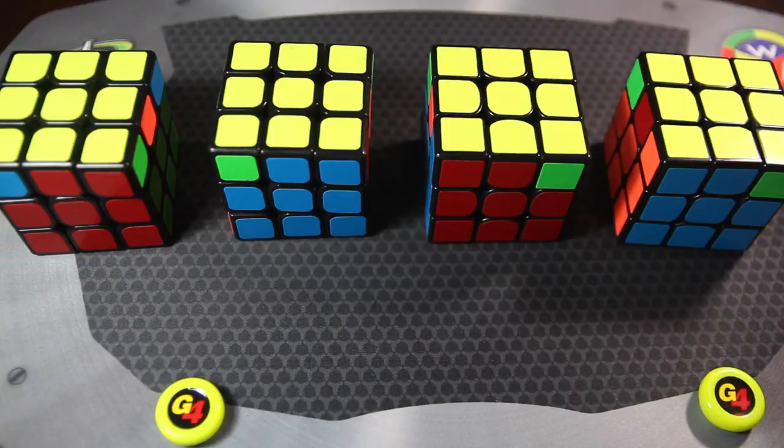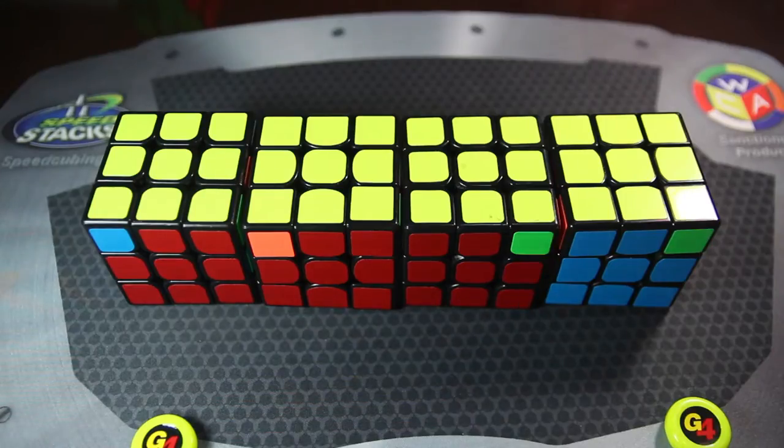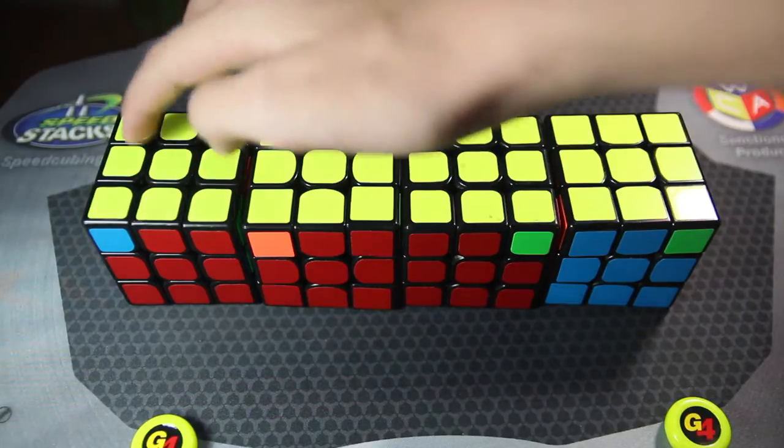Hello, today I'm going to show you how to recognize and execute the four G-perms. So here I've laid out the four G-perms in order: A, B, C, D.